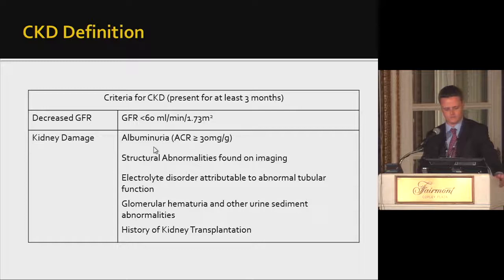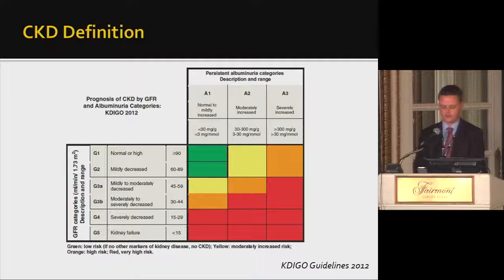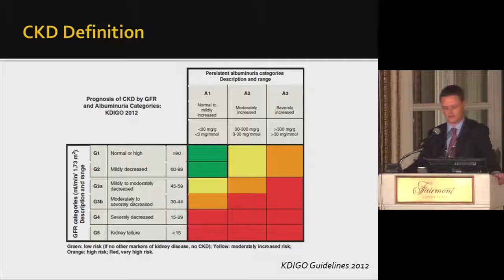We further divide CKD into categories based on GFR, and this is important because there are clear differences in risk depending on which category you're placed in. This figure from the KDIGO 2012 guidelines stratifies patients' risks by GFR and albuminuria category. Risk here includes mortality, cardiovascular disease, and end-stage renal disease. Later we'll go back into the individual risk for each category.